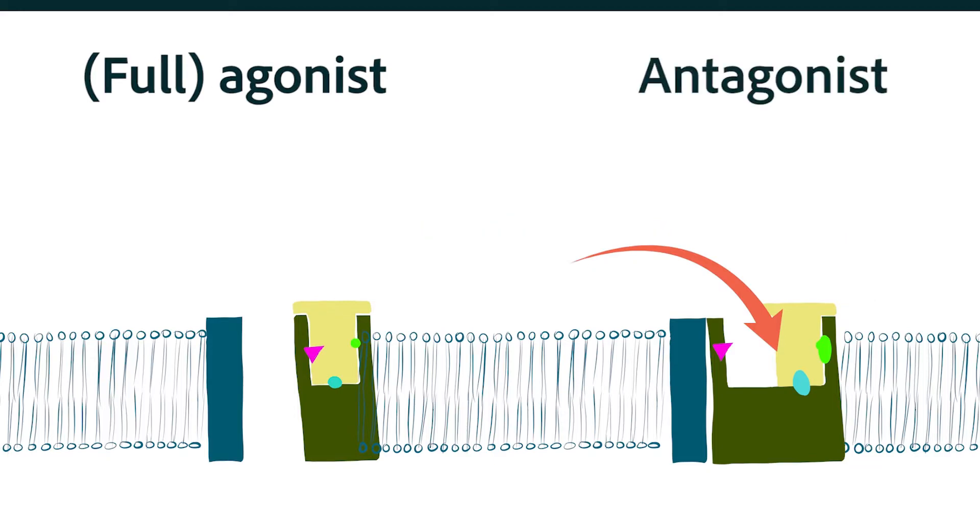In that hypothetical case, the drug would probably be the opposite end of the spectrum. It would have no physiological effect on the receptor and would be termed an antagonist, or sometimes called a blocker.